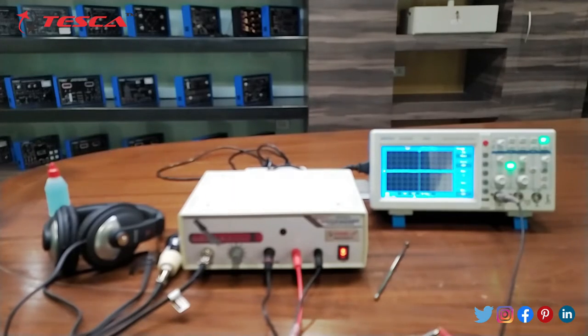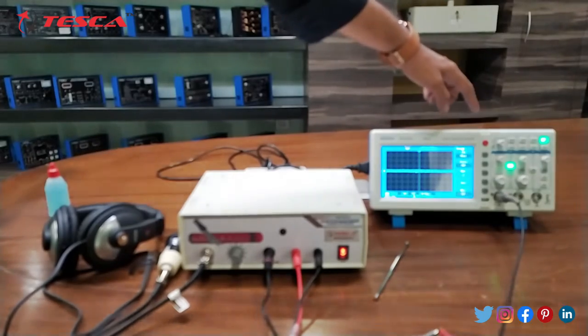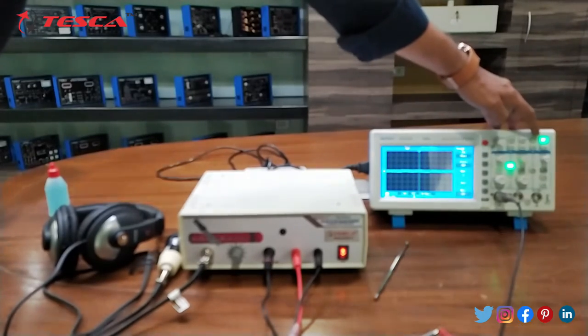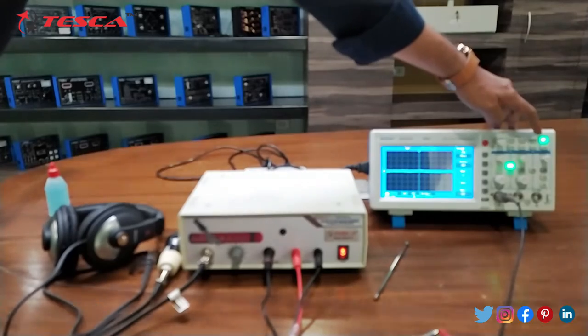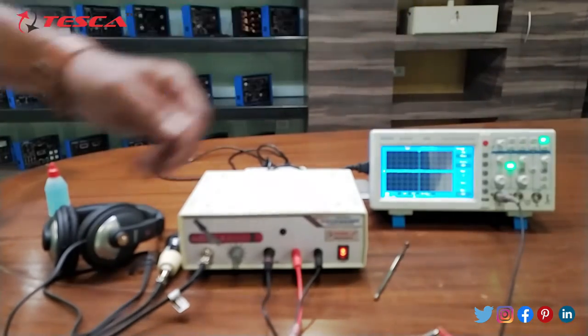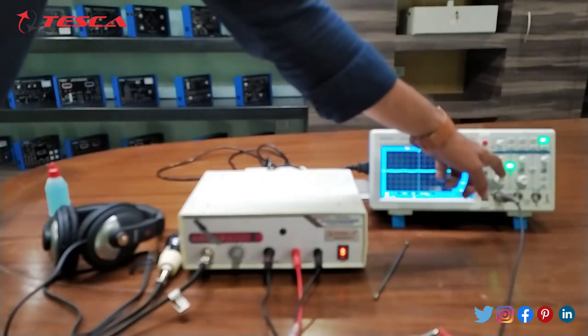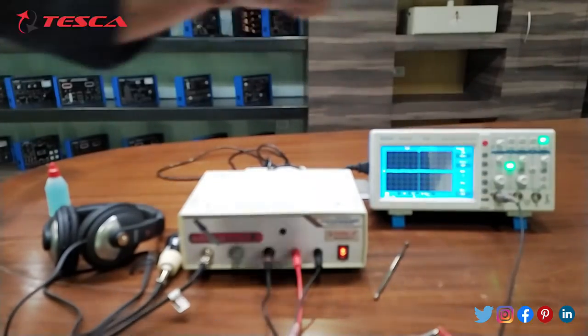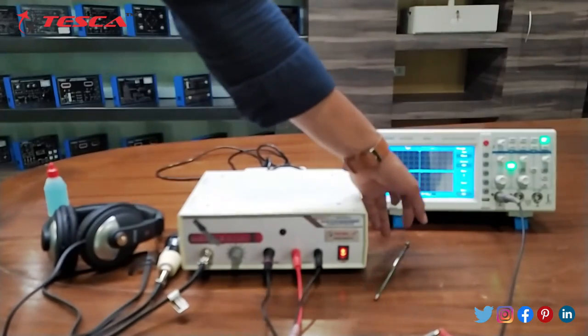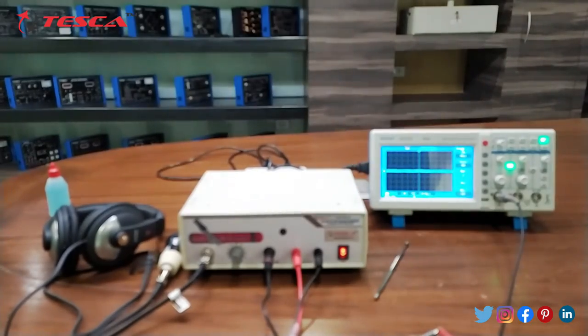Some of the points you should keep in mind while performing this experiment: You should keep the DSO on storage mode. And here is the storage button. You should press it before starting the experiment. Then you should keep the voltage at 0.5V. From here you can control the voltage and you will see the voltage here. These are the points you should keep in mind.